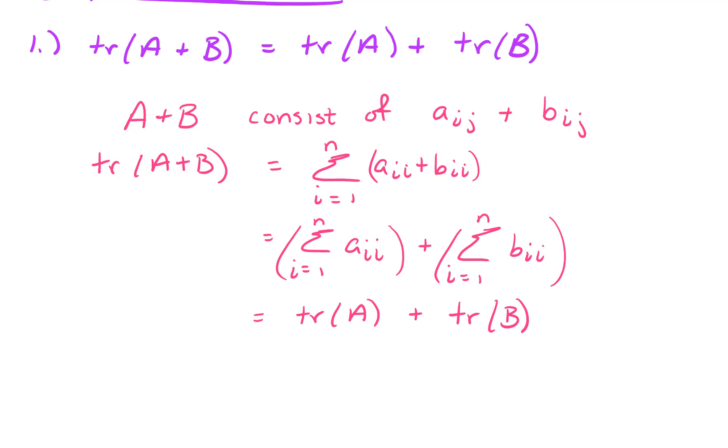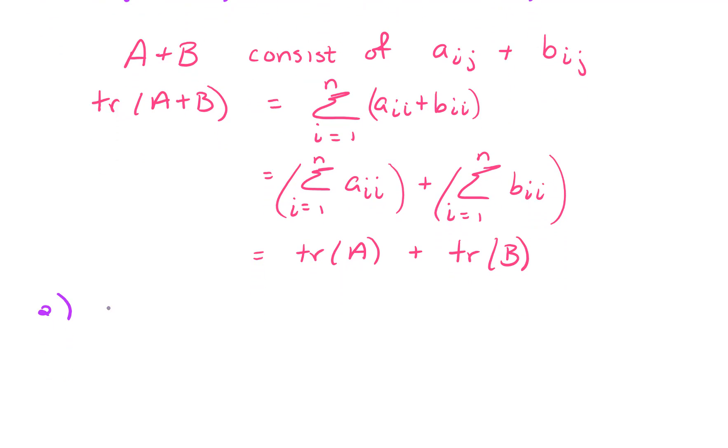The second property that we have is a multiplicative property. So the trace of AB is equal to the trace of BA. Remember that matrix multiplication is not commutative, but the trace is the same in those cases.